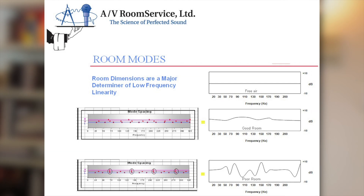In this chart you can see free air first — the frequency response of room modes in free air is nice and linear, perfectly flat because there are no reflections to cancel upon itself. In a good room you'll get a response something like that curve. In a poor room you'll get something like that, and it can vary by an easy 25 or 30 dB. Non-linear bass response in a room is probably the most obvious issue to those without trained ears.